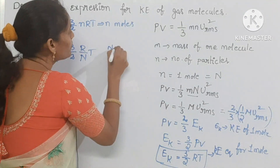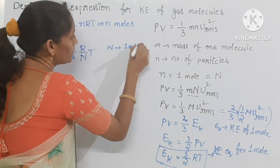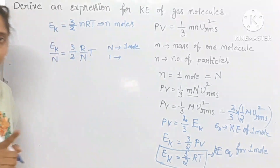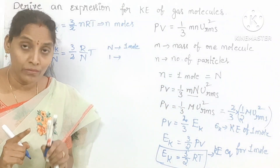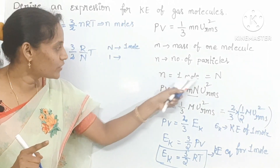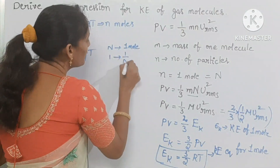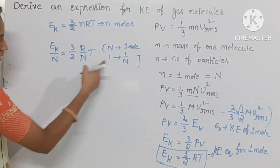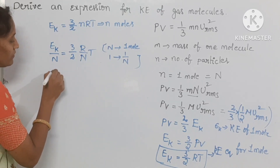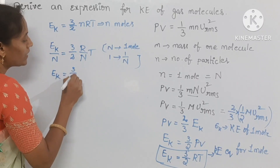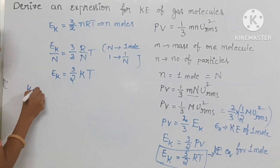N is the number of particles present in 1 mole. Then 1 molecule equals 1 by N moles. So for 1 molecule, you write 1 by N. That's why I write it as the inverse: 1 by N. So E_K equal to 3 by 2, and here R by N you can also write as K — K is the Boltzmann constant.